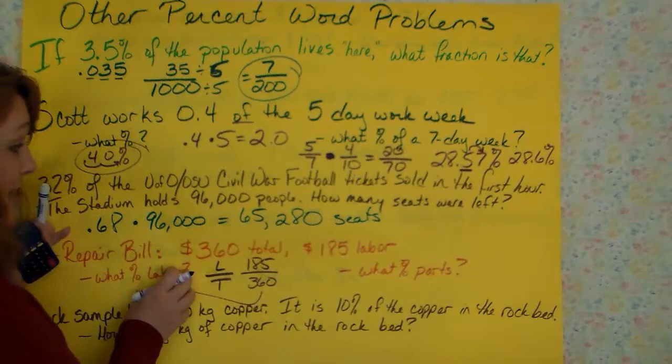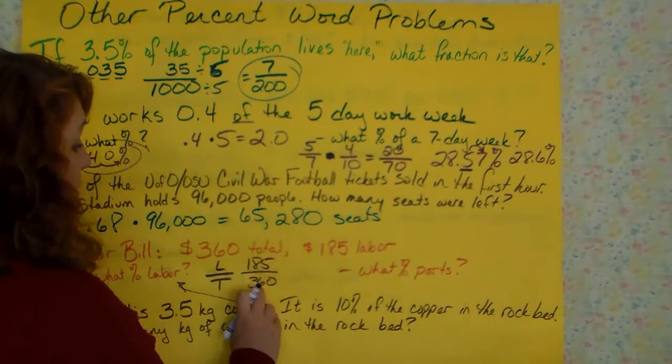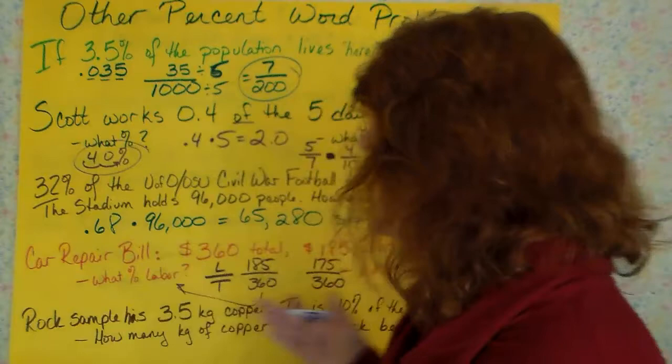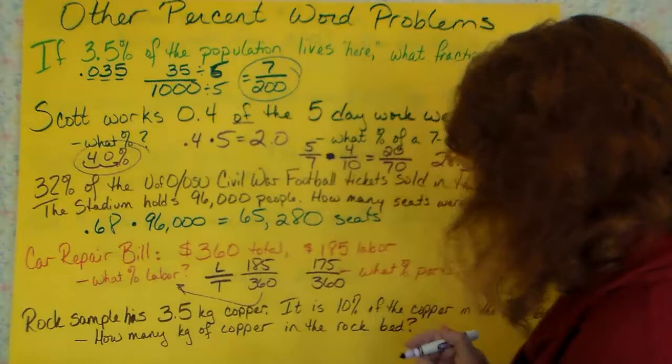You can either take this and subtract it from 100 to get you the other percent, or you can do $360 minus $185, which is $175, and you can divide that over $360. But I need you to see that they both work. Then you're going to divide that, that gives you a decimal, you move the decimal over twice, you round to whatever they need you to round to.